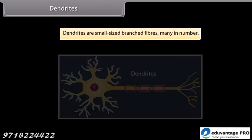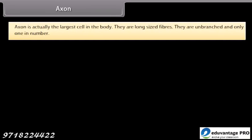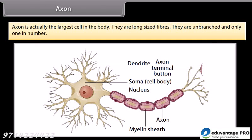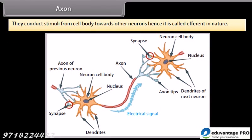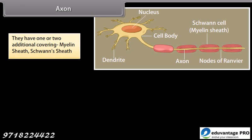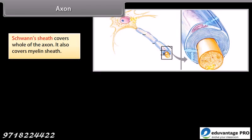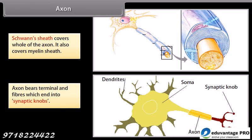Dendrites are small, branched fibers, many in number. They conduct stimuli towards the cell body, hence called afferent in nature. The axon is the largest fiber of the cell; it is long, unbranched, and only one in number. It conducts stimuli from the cell body towards other neurons, hence called efferent in nature. The axon has one or two additional coverings: myelin sheath and Schwann sheath. Myelin sheath is an insulating and protective sheath; where it is absent, that area is known as the node of Ranvier. Schwann sheath covers the whole axon. The axon bears terminal end fibers which end in synaptic knobs.